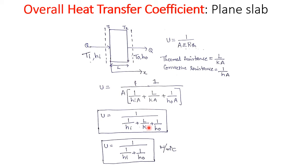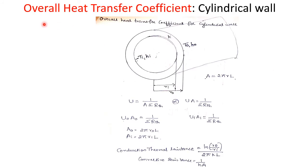If the thermal resistance of the wall is negligible compared to the other thermal resistances, then the conduction term L/K is neglected, and the overall heat transfer coefficient for the plane slab simplifies to U = 1 / (1/Hi + 1/H0), with units of Watt per meter square degree centigrade. Next, we study the overall heat transfer coefficient for the cylindrical wall.